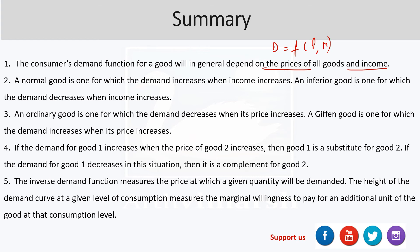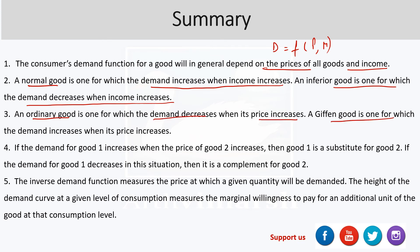A normal good is one for which demand increases when income increases. An inferior good is one for which demand decreases when income decreases. An ordinary good is one for which demand decreases when its price increases. A Giffen good is one for which demand increases when its price increases.